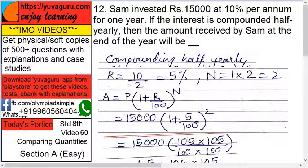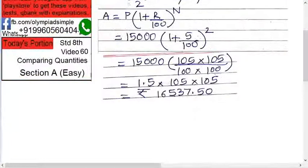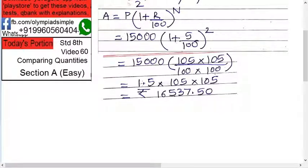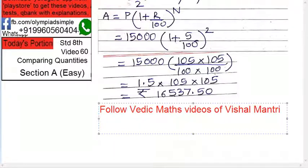So 15,000 — to solve this, 100 plus 5 is 105, the whole square, upon 100. So 105 into 105 upon 100 into 100. Multiply it as one point — all these four zeros cancel out, this becomes 1.5. So 1.5 into 105 into 105. Now, 105 into 105 is not easy by normal methods, but it is very easy.